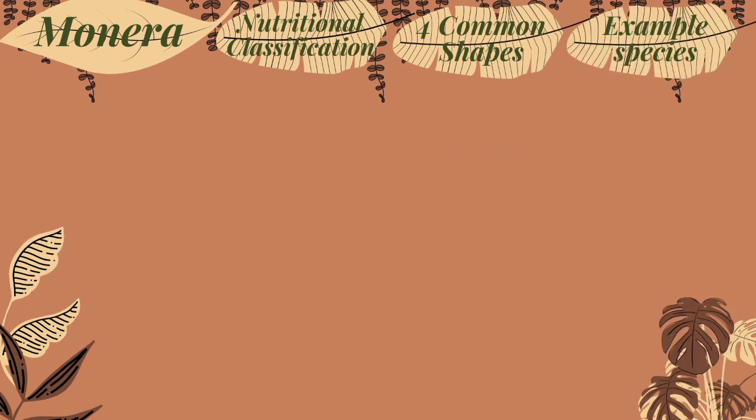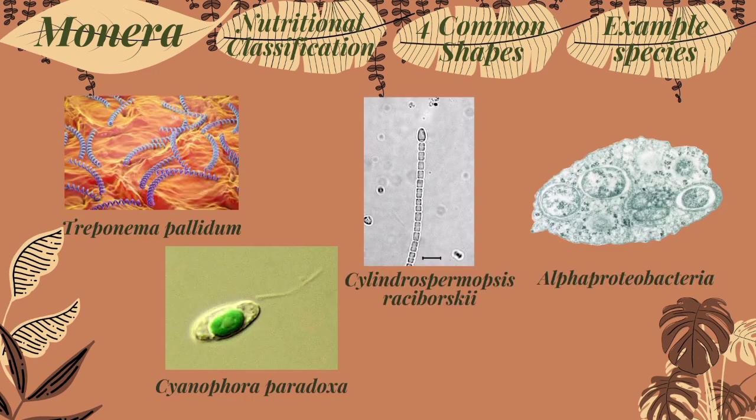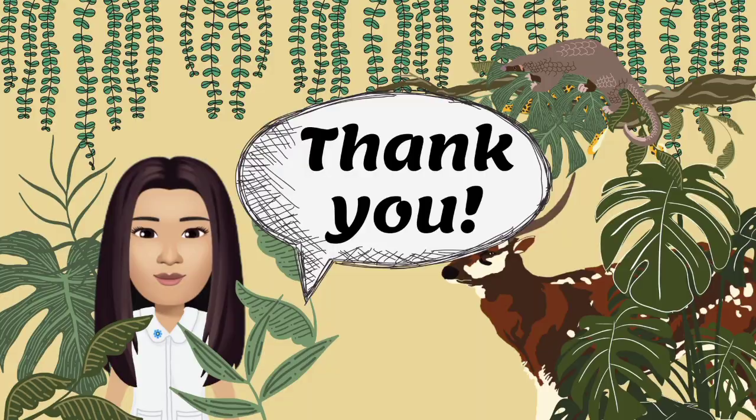Examples of species under kingdom Monera are alpha-proteobacteria, beta-proteobacteria, Cyanophora paradoxa, and Cylindrospermopsis raciborskii. That's all for today. Thank you!